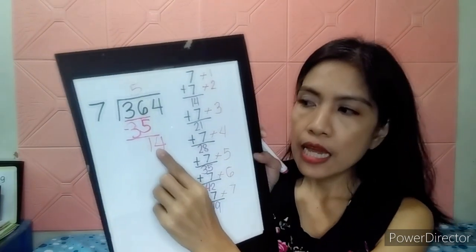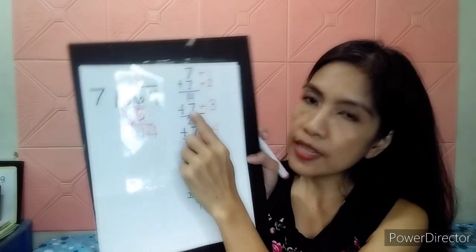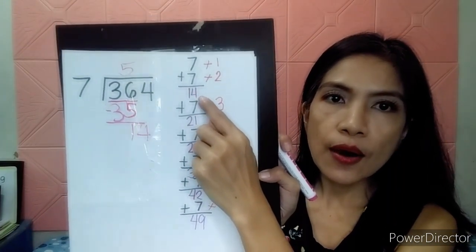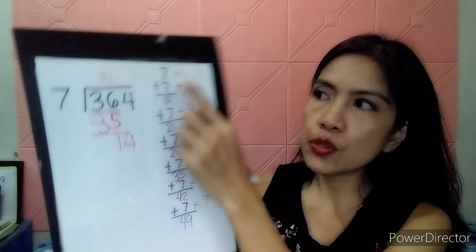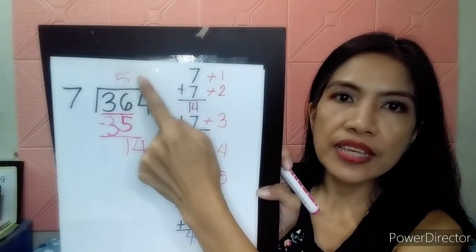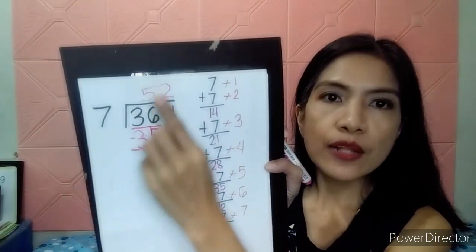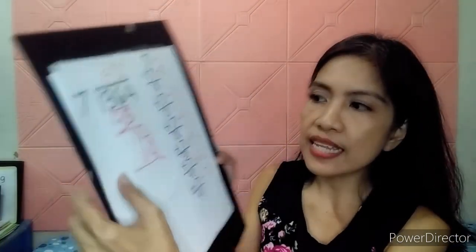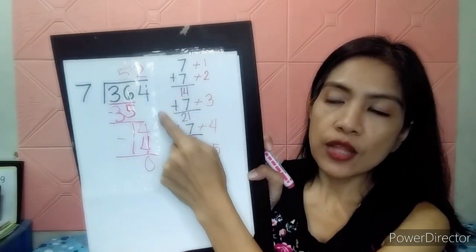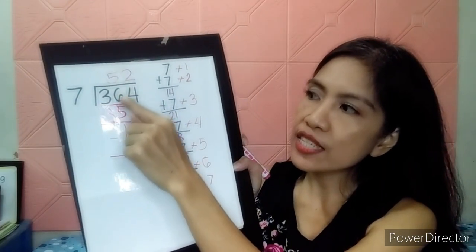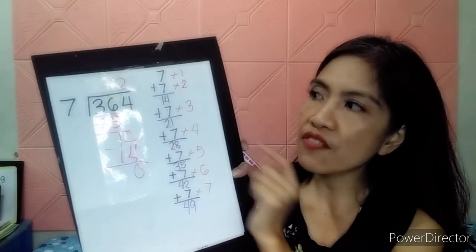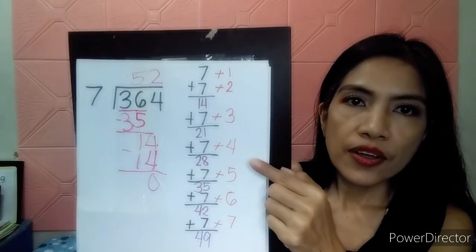So, we have now 14. Where is 14 near? Let's look. Where's 14? It's here. So, 14 is 2. Let's write 2 here. And we have 2 times 7. So, 2 times 7 is 14. And 14 minus 14 is 0. Is there any other number here? Not anymore. So, the answer for that is when you divide 364 by 7, you will have the answer of 52.